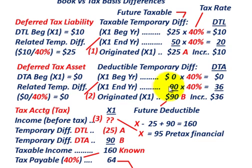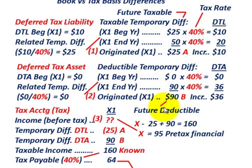At the end of the year in our example, the deductible temporary difference has moved up to $90,000. We have an increase for the year from zero to $90,000, so the amount originated during year X1 is $90,000. That's a future deductible amount, which would be a deferred tax asset.